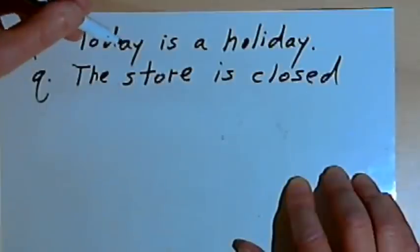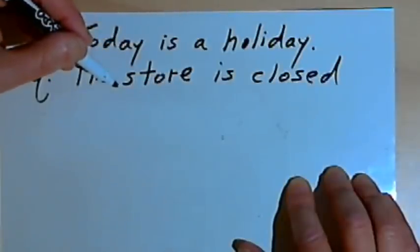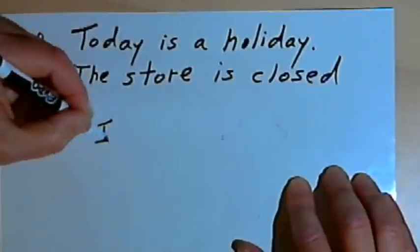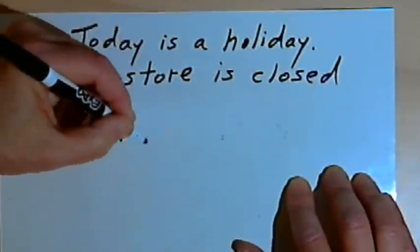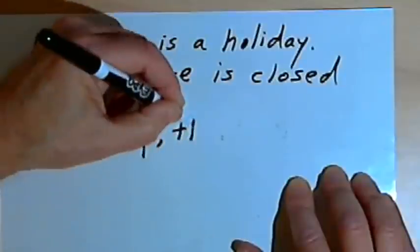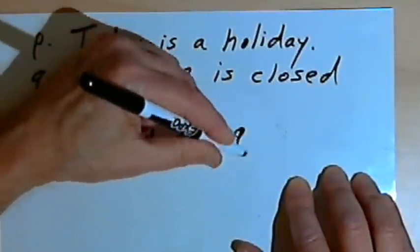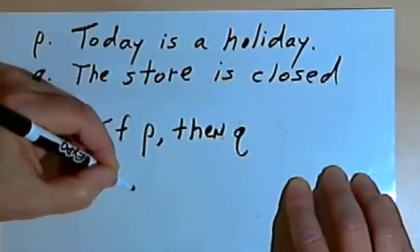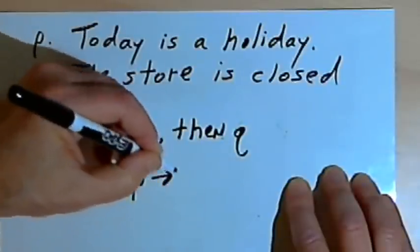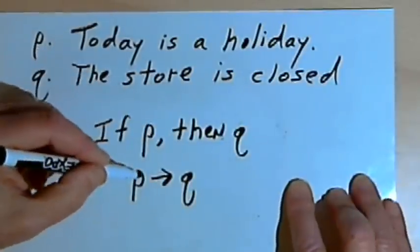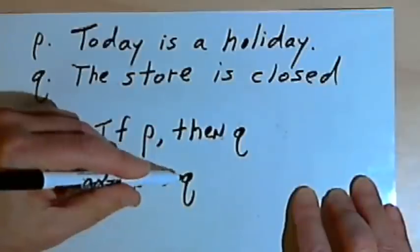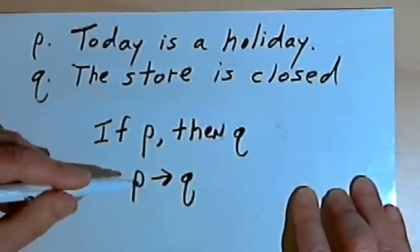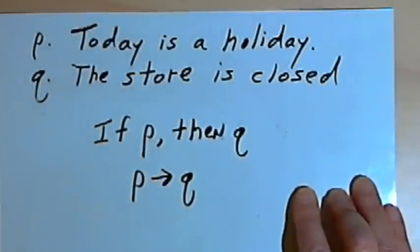The conditional statement is: if today is a holiday, then the store is closed. Or I could just say if P, then Q. I can write this with symbols — a P, an arrow, and a Q, with the arrow going from P to Q. This is read as 'if P, then Q,' or sometimes 'P implies Q.'